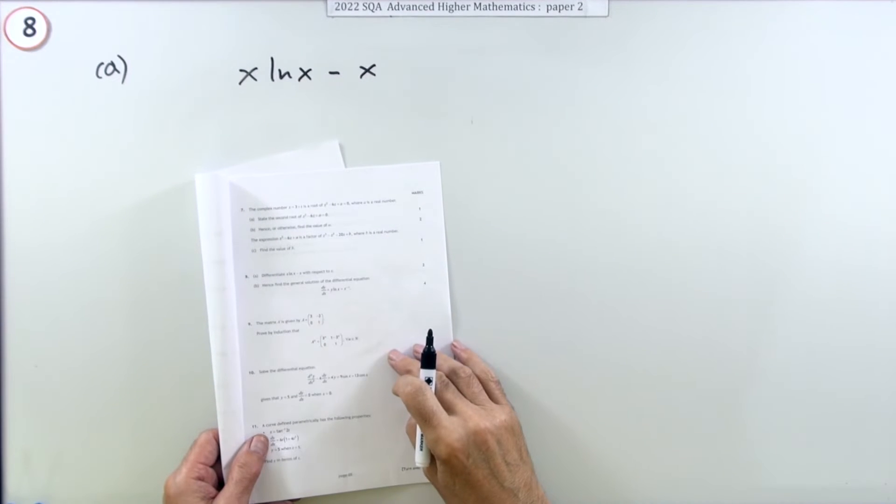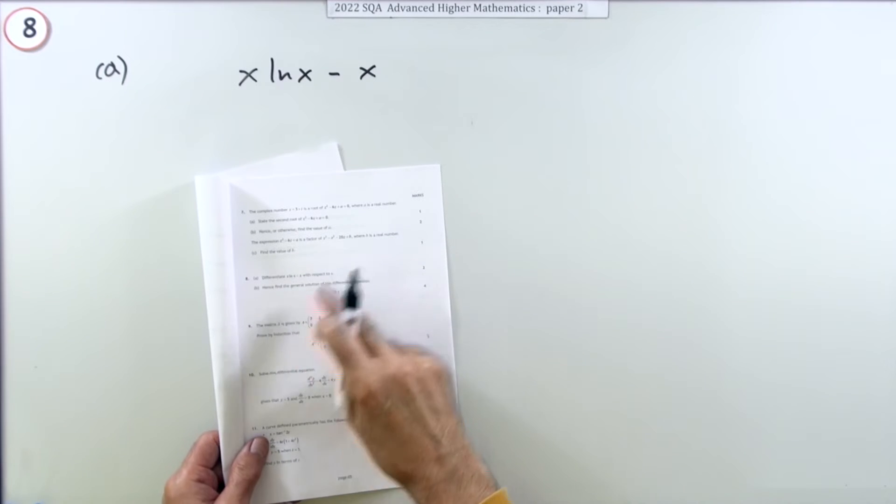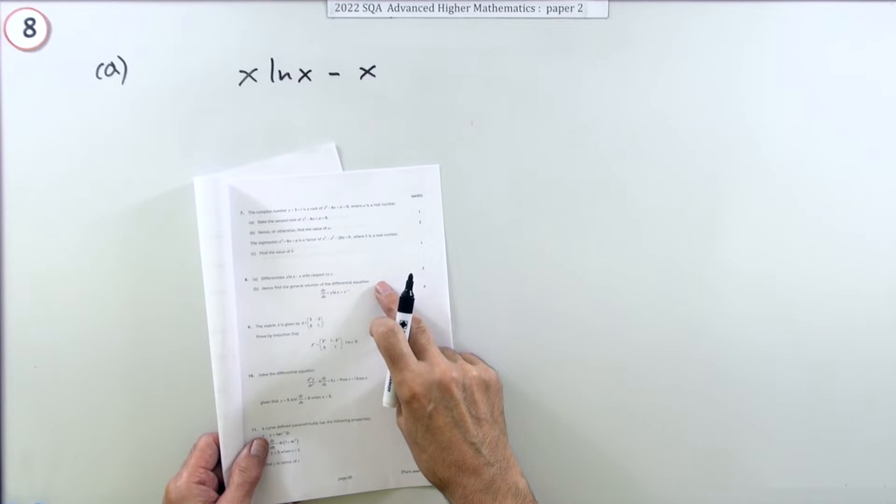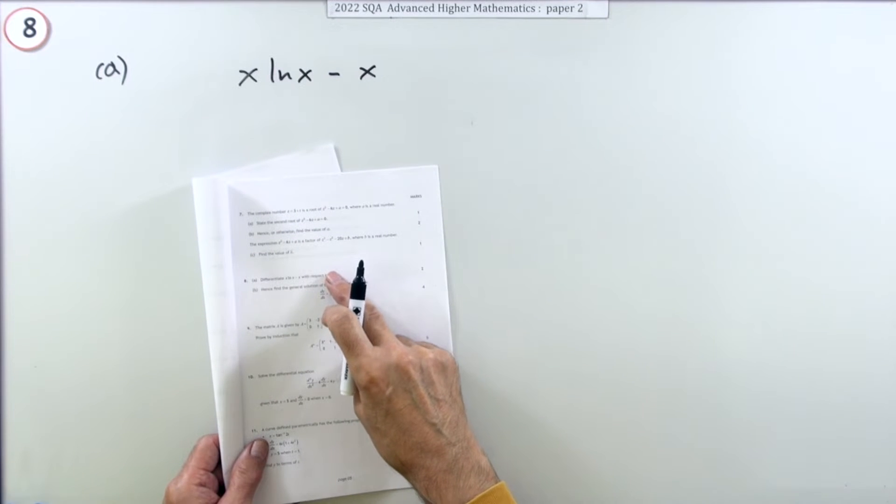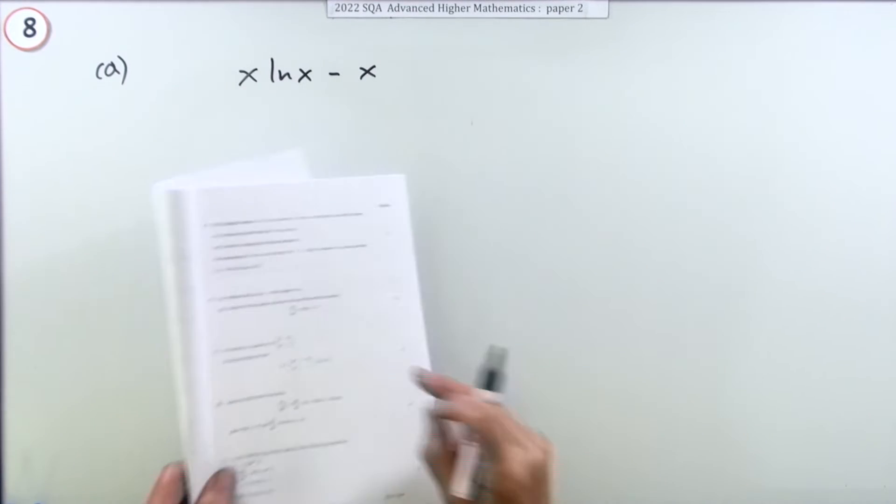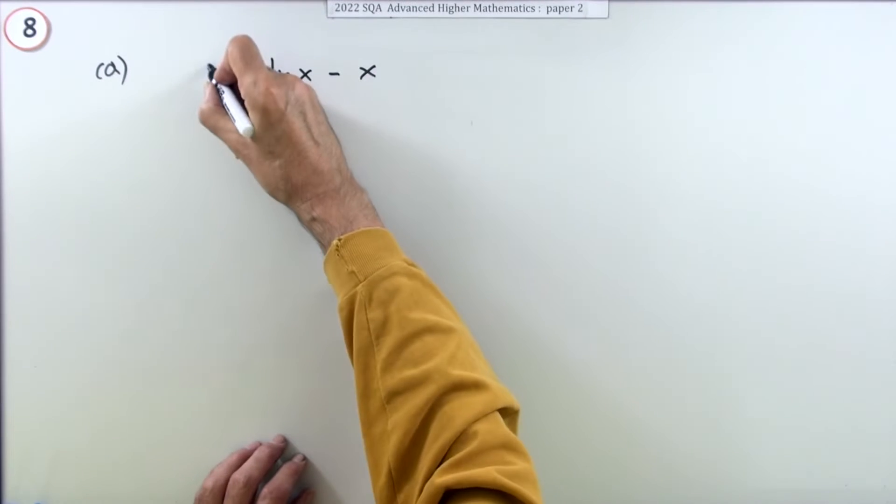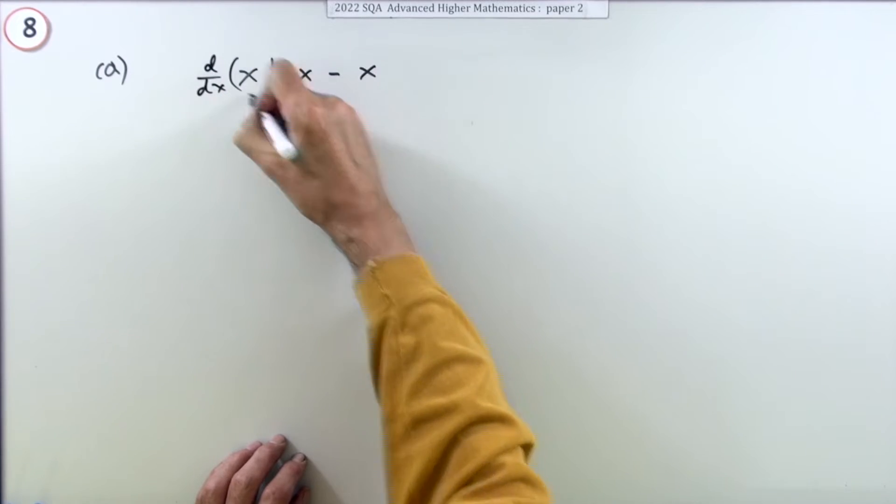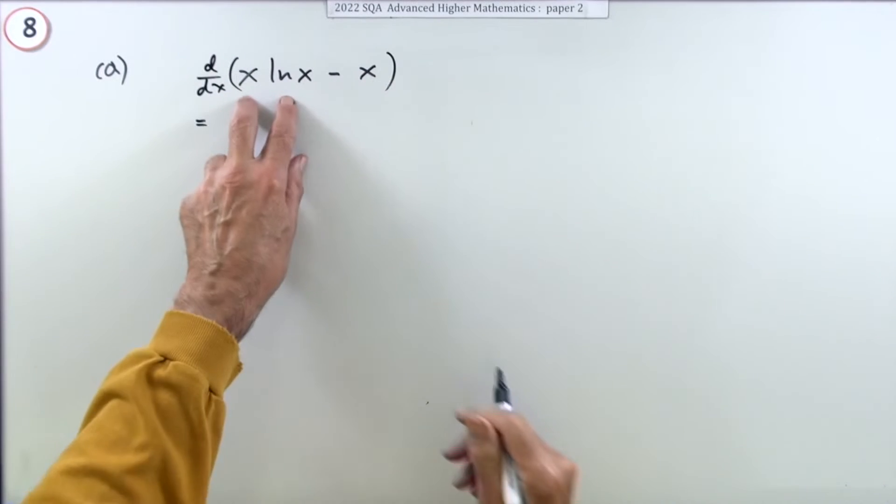Number eight from the 2022 Advanced Higher paper two. We've got differentiate and solve a differential equation. The first part just says differentiate, probably something to do with solving the differential equation though. So for two marks, differentiate this expression here.